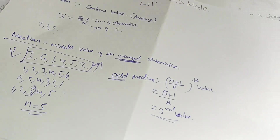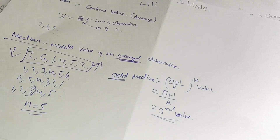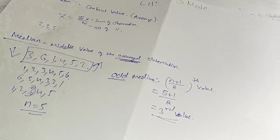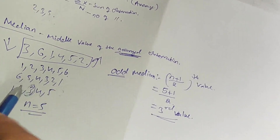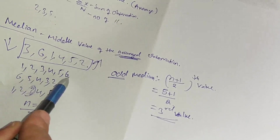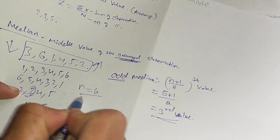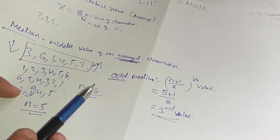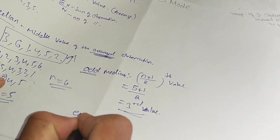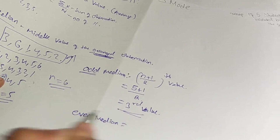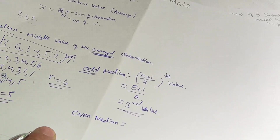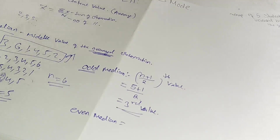You simply use this formula and get the answer. But if the number of observations is even — for example, 1, 2, 3, 4, 5, 6 — the value of n is 6, which is even. In this case we use the even median formula.